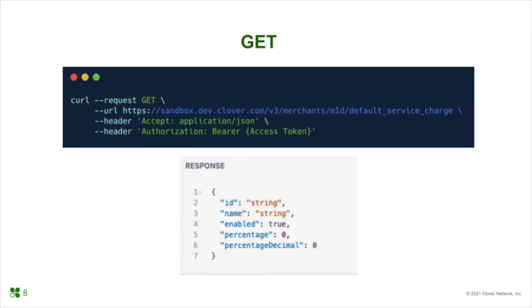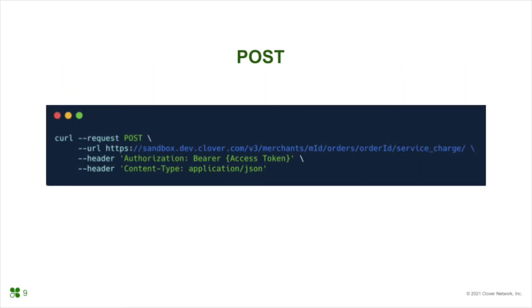Here is a snippet of a GET request API call to gather information on what service charges are on the merchant's account. The JSON response will provide the important details like its ID, name, and the amounts. There is also a POST request API call to add a service charge on the merchant's account. Please make sure you have the necessary read and write permissions to access these GET and POST calls on the merchant's account.